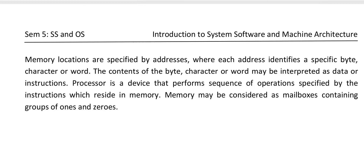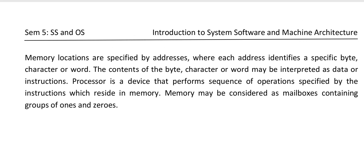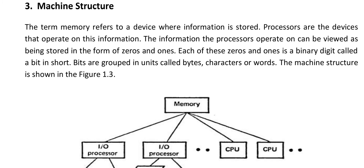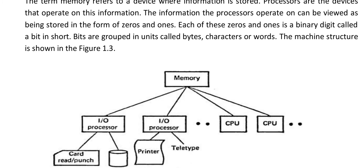With this we come to the end of Session 1. In this session we have learnt about what software is, the types of softwares — system software and application software — various examples of each, the pyramid of system programming architecture, and the various components involved in the machine structure. Thank you for your patient listening.